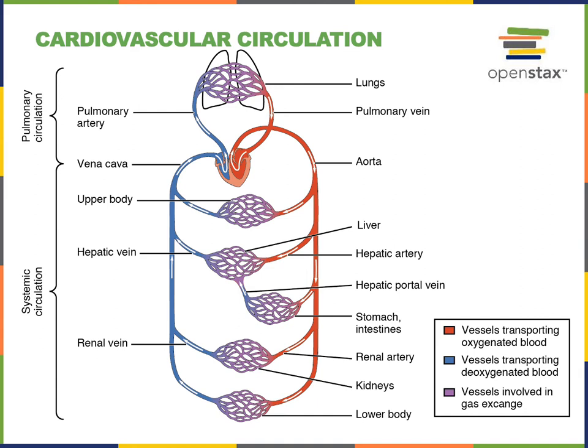From the capillaries, blood continues flowing into lower-pressured veins that drain into the atria of the heart, where the pressure is the lowest. Blood pressure drives the flow of blood — blood flows from areas of high pressure to low pressure.